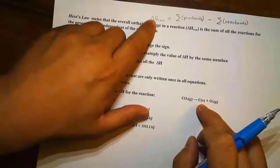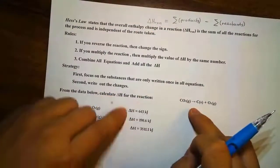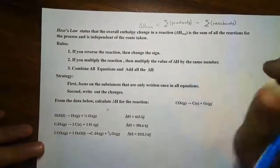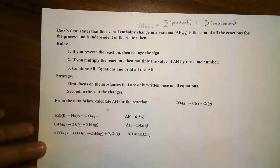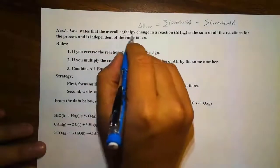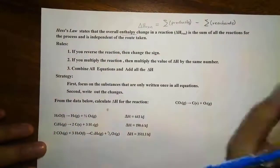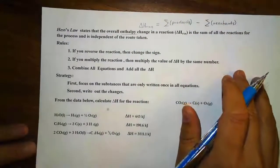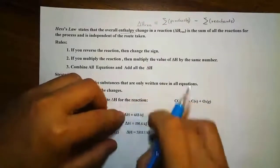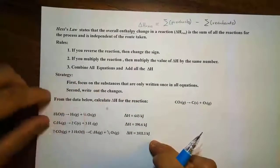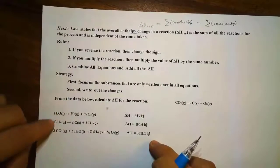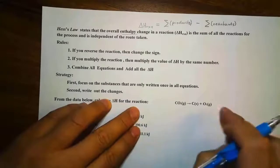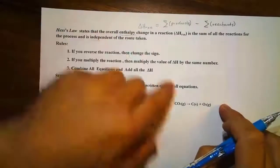Can you calculate for the ΔH reaction of this one from the given data? There is something called Hess's Law. Hess's Law states that the overall enthalpy change in a reaction — ΔH reaction — is the sum of all the reactions. The process of this overall reaction takes three separate reactions; you add all of them together and you will get your ΔH.